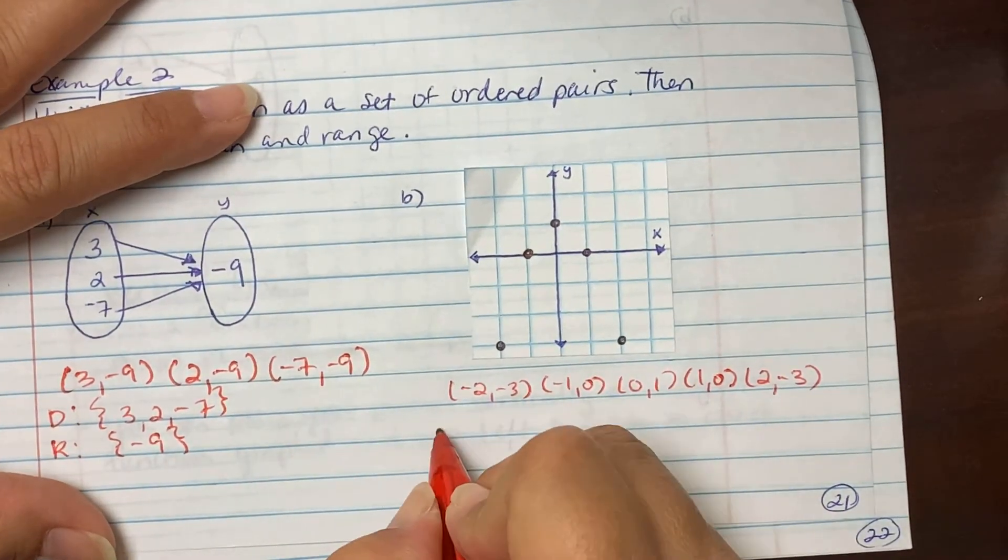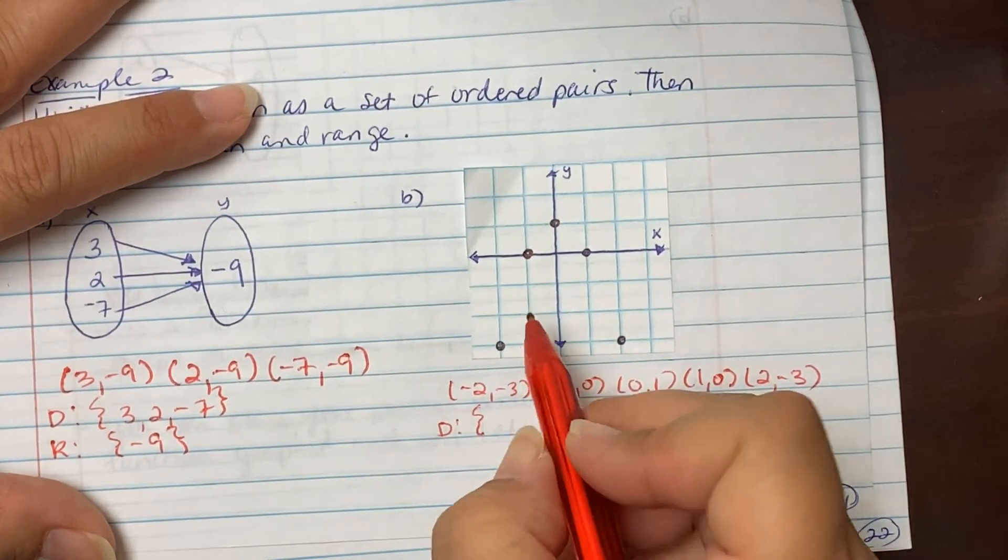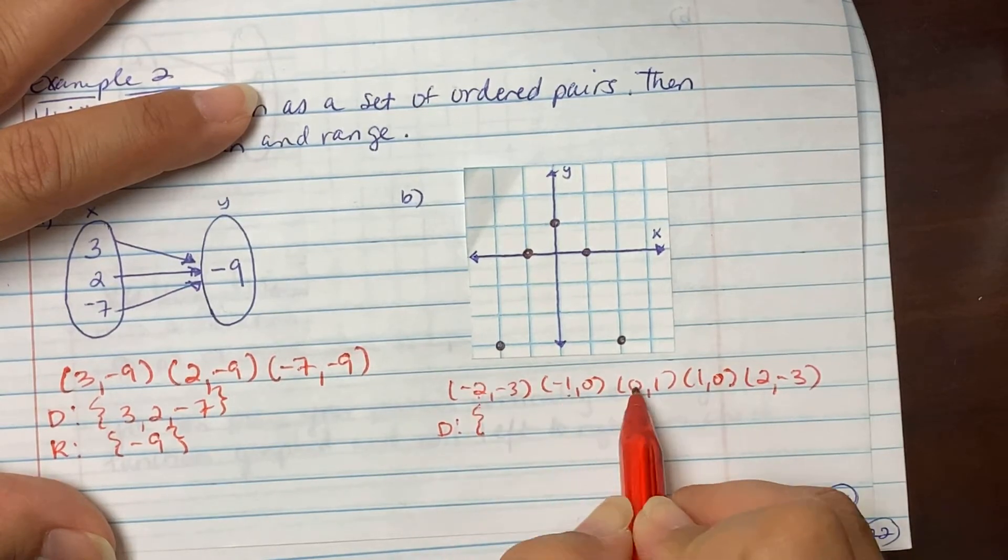So I listed our ordered pairs. But now when we go to domain, remember, we don't repeat our x's. So negative 2, negative 1, 0, 1, 2.